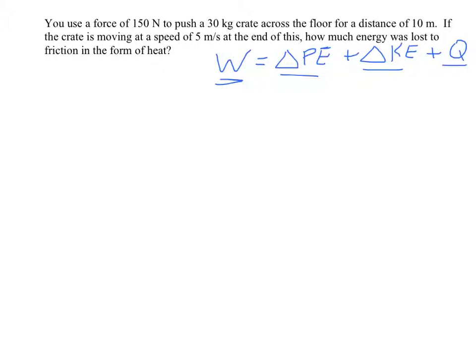Here's an example where we're pushing a crate across the floor. The crate has a mass of 30 kilograms, which means it weighs 300 newtons. We are using a force of 150 newtons to push it across the floor, and we end up pushing it a distance of 10 meters. So the first thing we want to do is calculate how much work is being done here. Remember, work is force times distance.